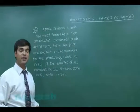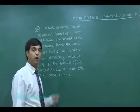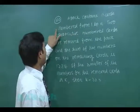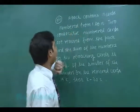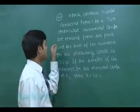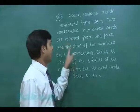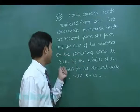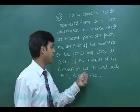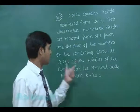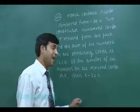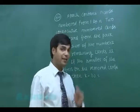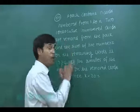Let's consider the last question, question number 60 of paper one. A pack contains n cards numbered from 1 to n. Two consecutively numbered cards are removed from the pack and the sum of the numbers on the remaining cards is 1224. If the smaller of the numbers on the removed cards is k, find the value of k minus 20.